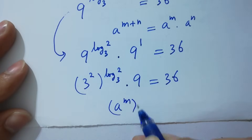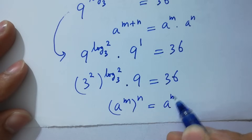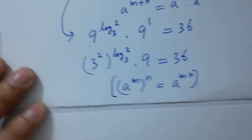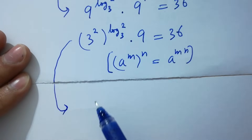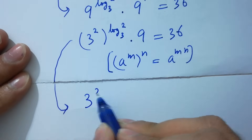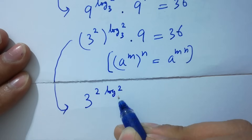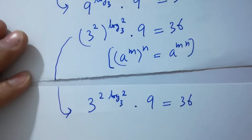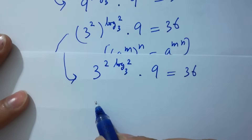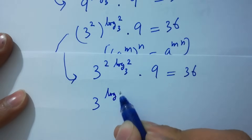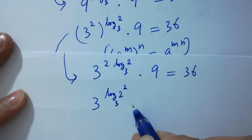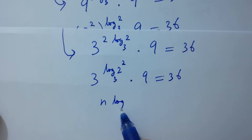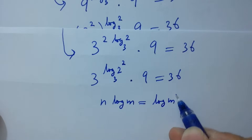As (a to the power m) to the whole power n equals a to the power mn, it will be 3 to the power (2 · log base 3 of 2) times 9 equals 36. Since n·log m equals log(m to the power n), we get 3 to the power (log base 3 of 2 squared) times 9 equals 36.